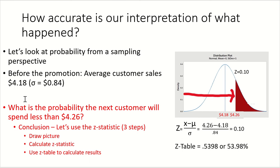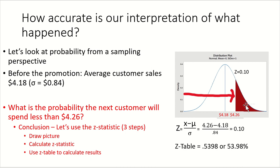For example, if we were looking at what's the probability that the very next customer that walks into the store is going to spend less than $4.26 — I want you to get in the habit of doing this in three steps. Step one: draw a picture. The picture starts with a normal distribution. We know that in the middle the average is $4.18. We draw in $4.26 over here because it's bigger than $4.18, and we color in the area for the probability of spending more than $4.26.